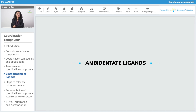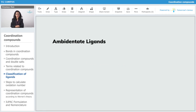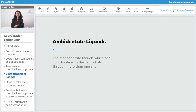Ambidentate ligands. What are ambidentate ligands? Ambidentate ligands are monodentate ligands which can coordinate with the central atom through more than one side. Ambidentate ligands also have two donor atoms, but the catch is that even though they have two donor atoms, they can donate to the metal through only one atom at a time.